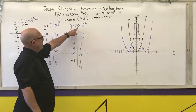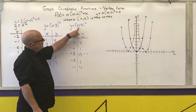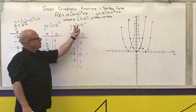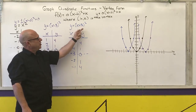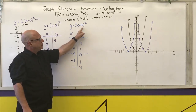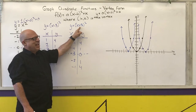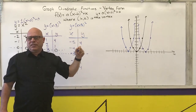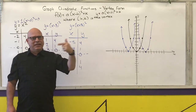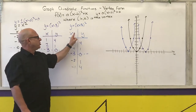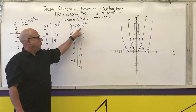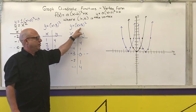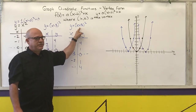This is inside the parentheses, so it causes my graph to shift 3 units in the opposite direction of plus. The opposite direction of plus is to the left. So this graph is just the regular parabola shifted 3 units to the left.